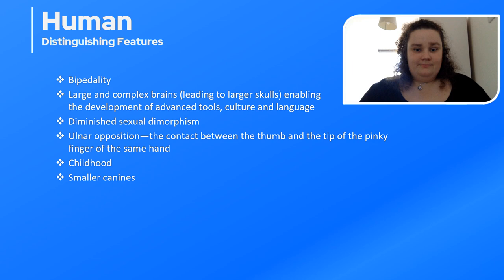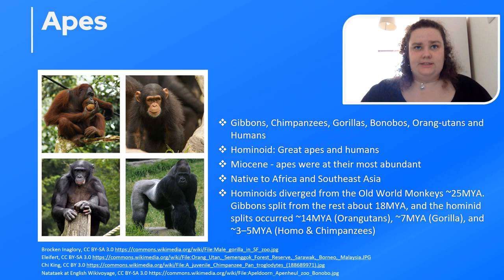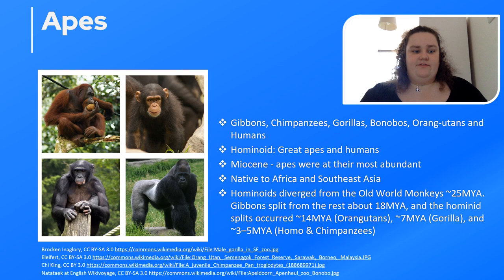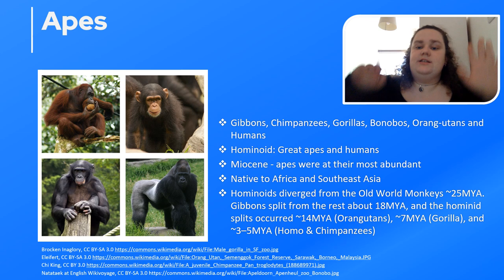Apes include gibbons, chimpanzees, gorillas, bonobos, orangutans, as well as humans and all the species that led up to humans. The hominoids include the great apes — chimpanzees, gorillas, bonobos, and orangutans — as well as humans. Apes were most abundant in the Miocene and are native to Africa and Southeast Asia. What separates apes from monkeys is that they are tailless, have a wider degree of freedom of motion at the shoulder joint for arm swinging, and all bar humans and gorillas are excellent tree climbers.